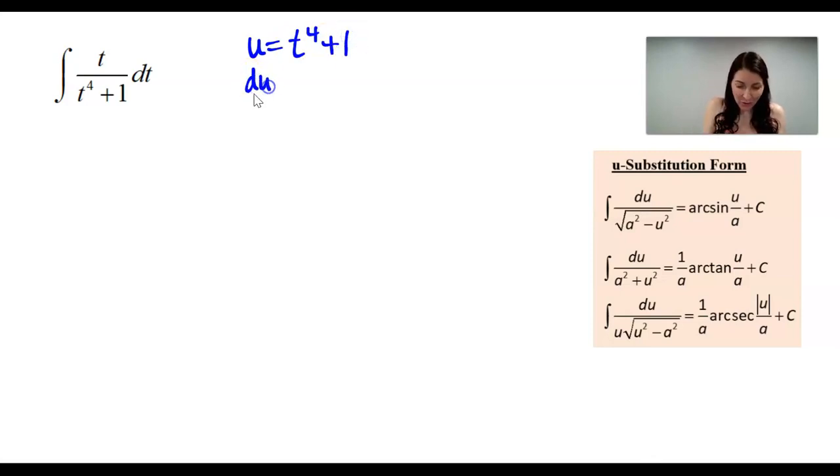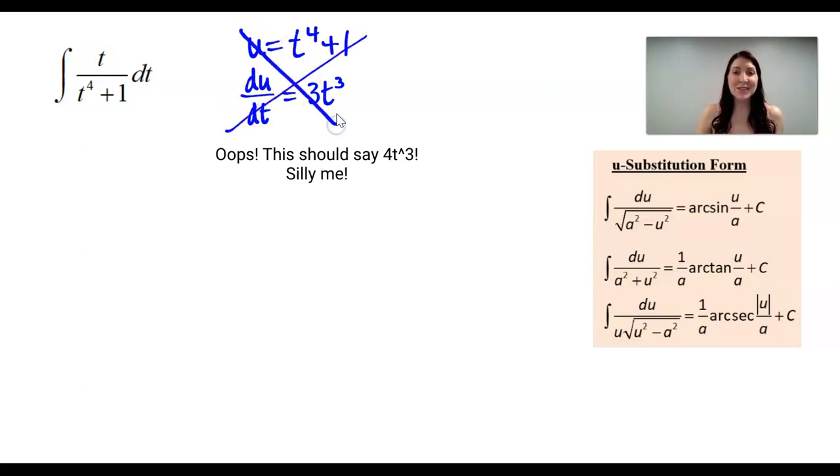Then when they take the derivative of u with respect to t, they get 4t cubed. And that's where you run into a problem because you don't have a t cubed in your numerator. You only have a t. So we need to trash that one and come up with a different u value. And this is a tricky one. It's actually a hidden arc tangent problem. So that's what I'm going to help show you today.